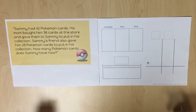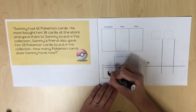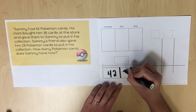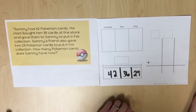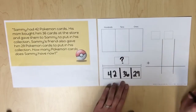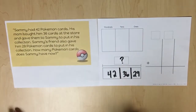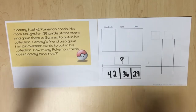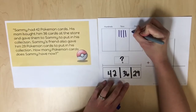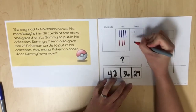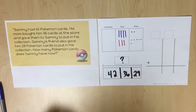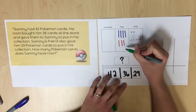First, the knowns and unknowns should be represented on the strip diagram. We know Sammy had 42 Pokémon cards, his mom gave him 36 more, and his friend gave him 29 Pokémon cards. Our unknown is the total number of Pokémon cards. The quantities can then be represented on a place value chart. We know Sammy had 42 Pokémon cards, then his mom bought him 36, and then his friend gave him 29.